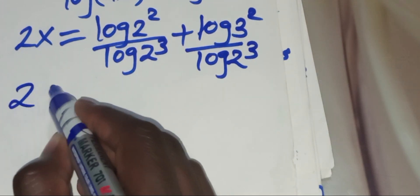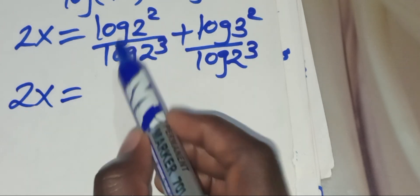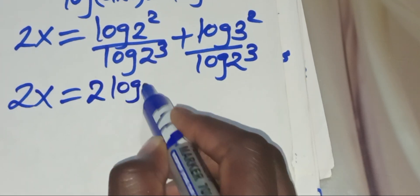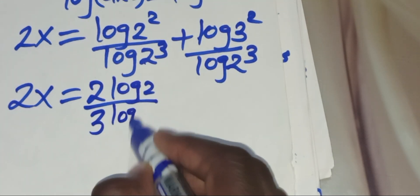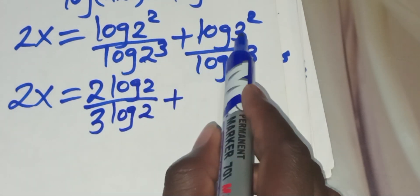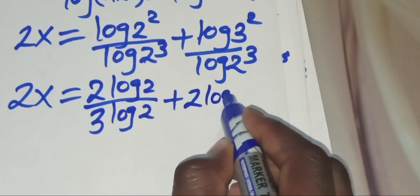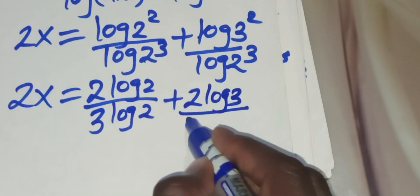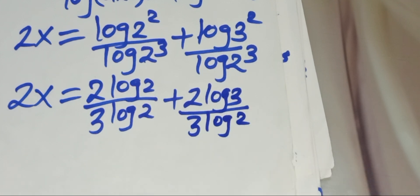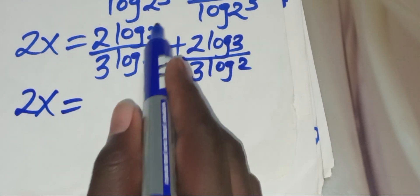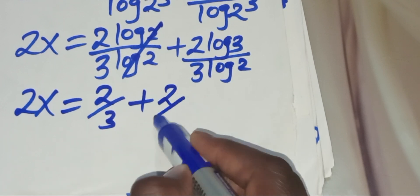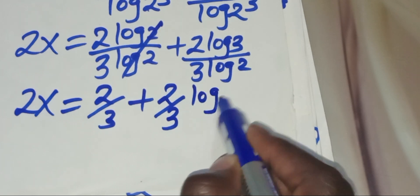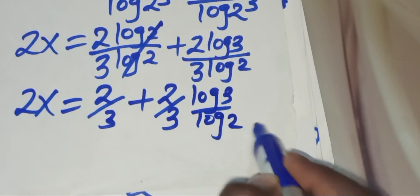Now 2x equals log 2 to the power 2, which we can express as 2 log 2, divided by log 2 to the power 3, which can be expressed as 3 log 2, plus log 3 to the power 2, which can be expressed as 2 log 3, divided by 3 log 2. So that means 2x equals 2 over 3, plus 2 over 3 times log 3 divided by log 2.